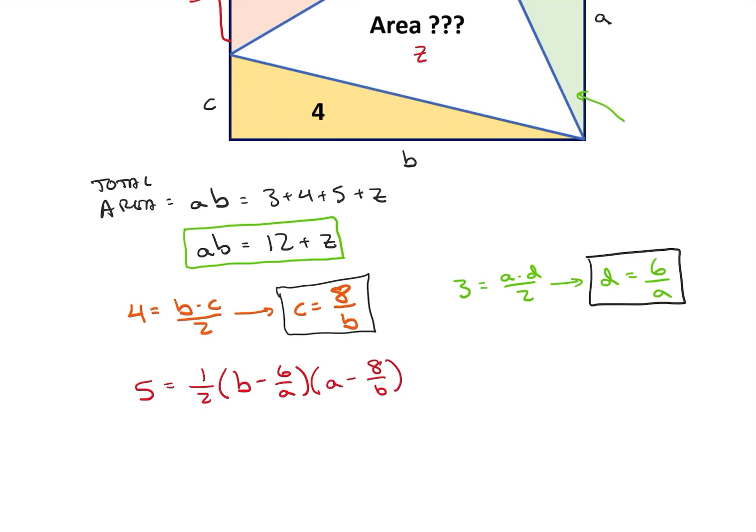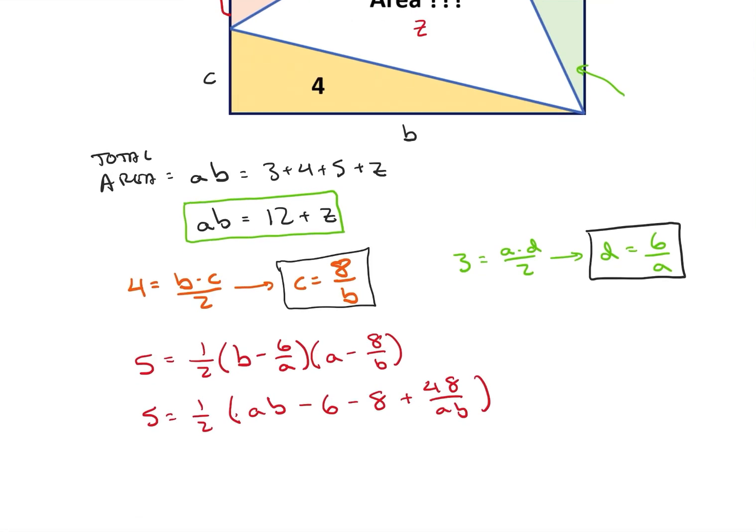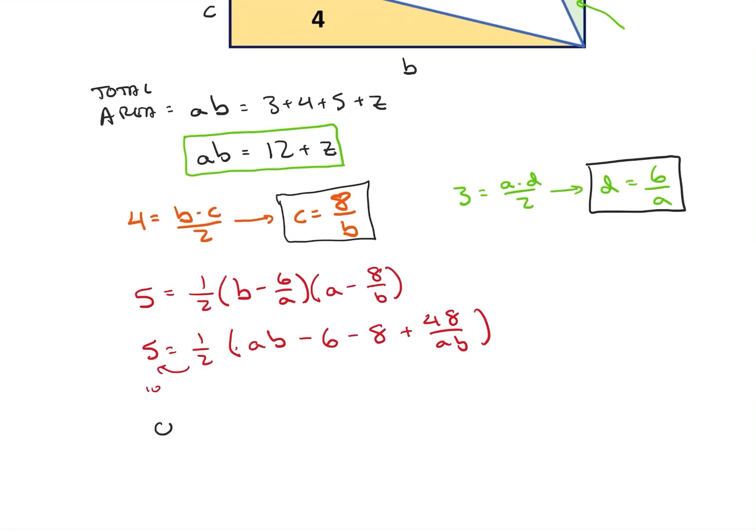So let's go ahead and multiply this through. So I'm going to have five is equal to one half. And then I'm going to have A times B minus six over A times A minus eight over B times B plus 48 divided by AB. So I can divide out that two. So that becomes a 10. Then we can move things over to the same side. So I can say zero is equal to AB minus 24 plus 48 divided by AB.